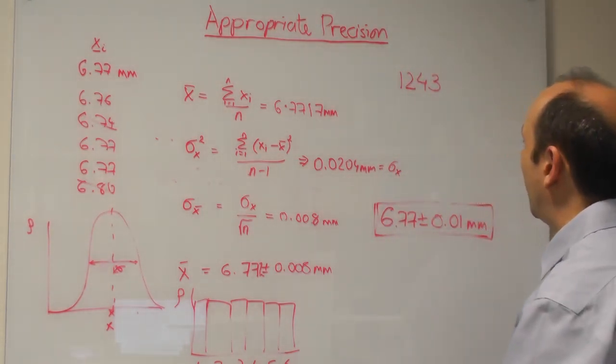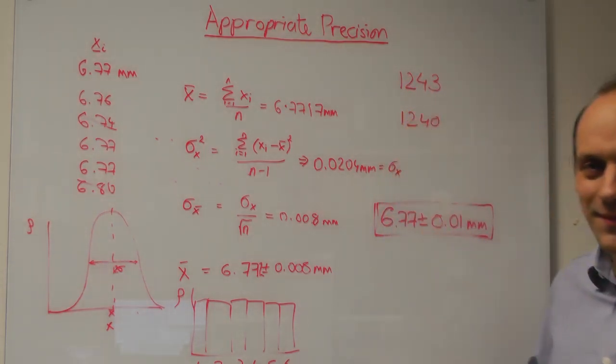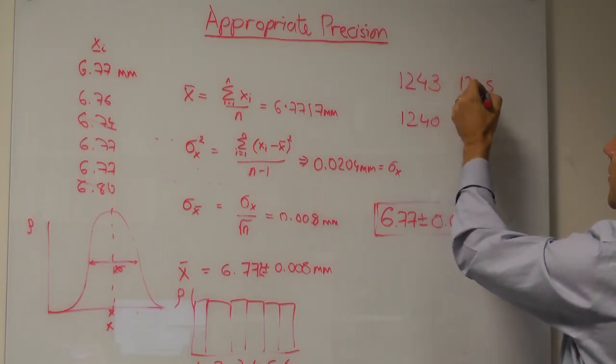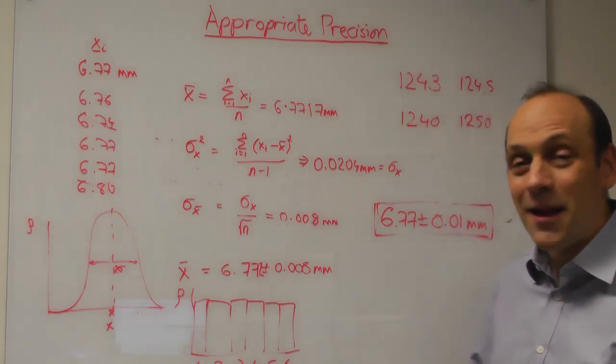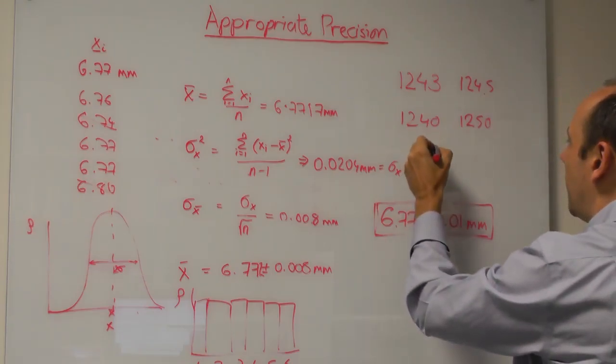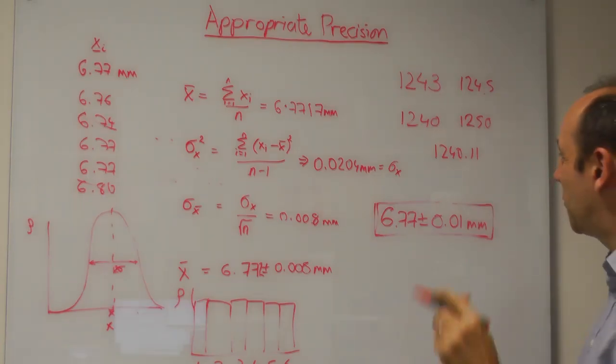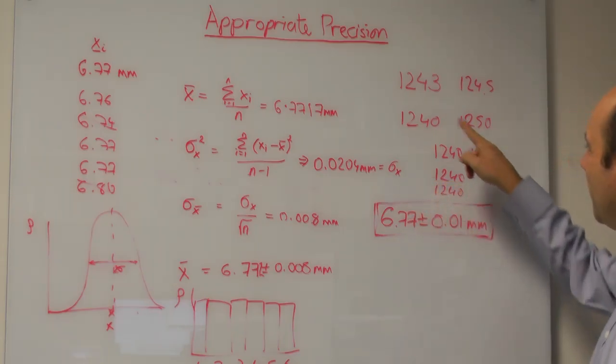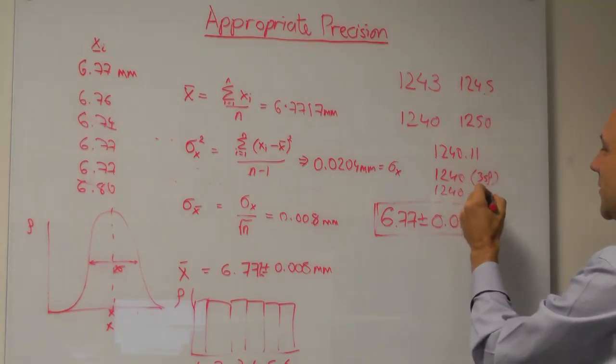To 3SF, I would take the first three digits of that, or 1,240. If I had a measurement of 1,245, I'd round the last digit, so I would measure 1,250 to 3SF. If I had a measurement of 1,240.11, then to 3SF that's still 1,240. But to 4SF, it's also 1,240. So it's only meaningful if I say how many significant figures I used. So this one here is 4SF.